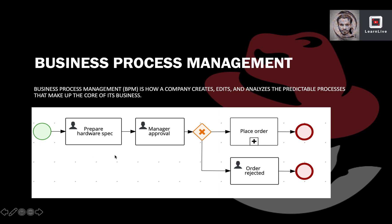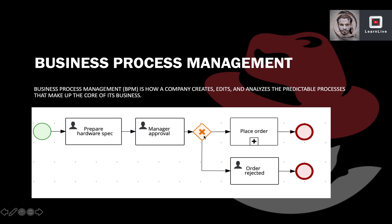Looking at a business process example in the screenshot, this is an IT order for some hardware. The first task is a human task to prepare the specifications for the hardware. Then it goes to the manager approval step — if approved, it will place the order; if rejected, it goes to order rejection and stops the process. This uses an if-else condition similar to programming.